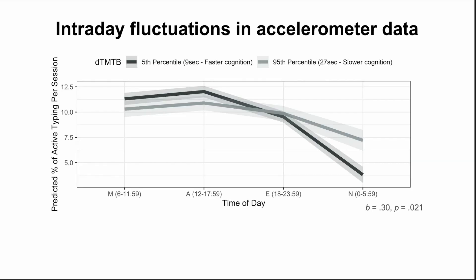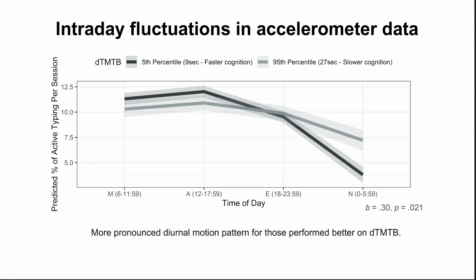Here I am showing the intraday fluctuations in accelerometer data. On the x-axis is time of day, and on the y-axis is overall motor activity captured by the accelerometer during the keyboard sessions — specifically, the percentage of accelerometer samples that show accelerations within each typing session. Both curves are concave down, suggesting that overall, individuals moved more during keyboard sessions in the mornings and afternoons, and the amount of movement decreased as the day went on. Additionally, individuals who performed better on the digital trail making test showed a more pronounced diurnal motion pattern than those who performed worse, suggesting this difference can be partly explained by cognition.